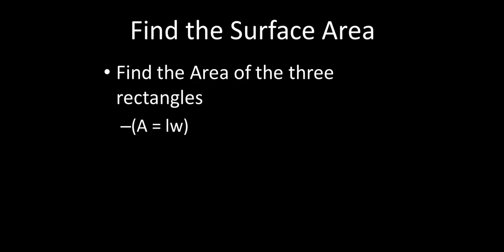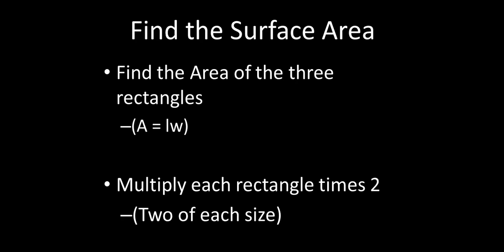What you end up with is the area of three different rectangles, the side, the bottom and top, and the front and back. And you're going to multiply that times two. So each rectangle you're going to multiply times two, and I'll show you how to do that.